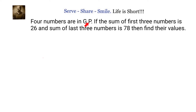Four numbers are in GP. If the sum of the first three numbers is 26 and the sum of the last three numbers is 78, find their values. We have been given that four numbers are in GP, so whenever we have numbers in GP, the general way to represent them is a, ar, ar², ar³.